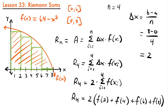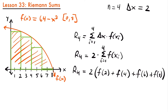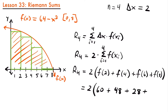We take each of those x values and plug them into our function f(x) = 64 minus x squared. Plugging in 2 gives 64 minus 4, which is 60. Plugging in 4 gives 64 minus 16, which is 48. Plugging in 6 gives 64 minus 36, which is 28. And plugging in 8 gives 64 minus 64, which is 0.